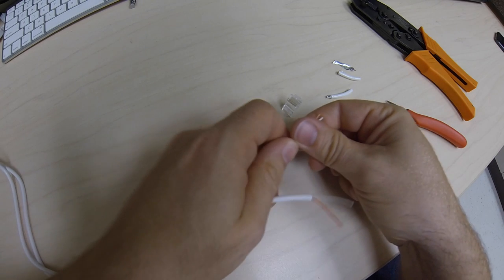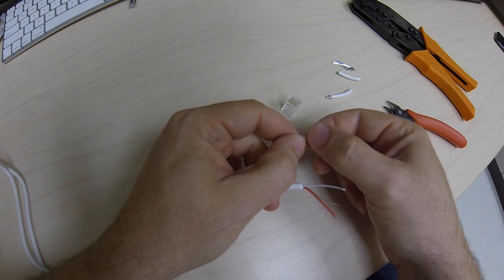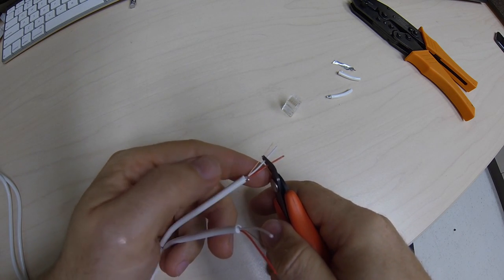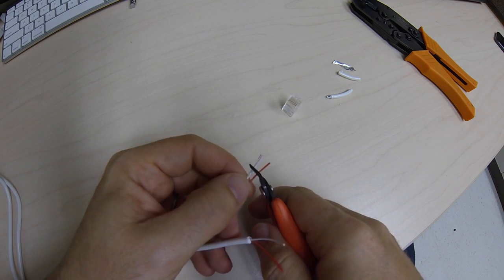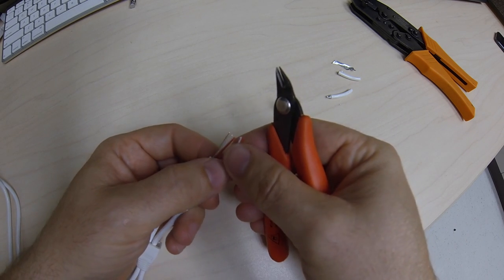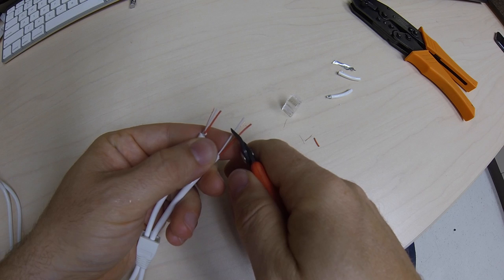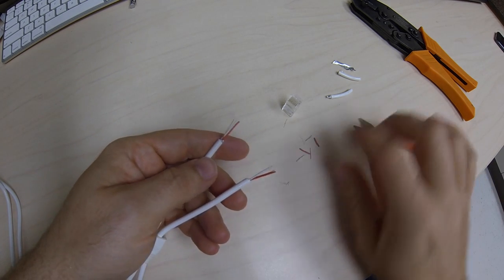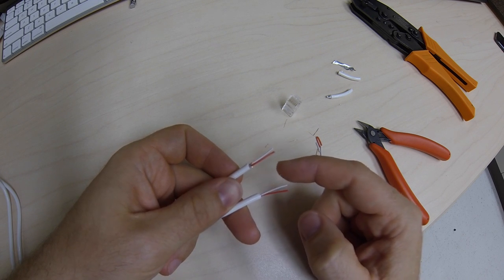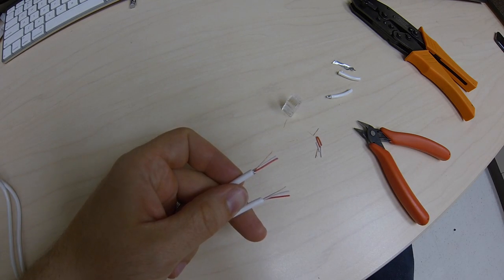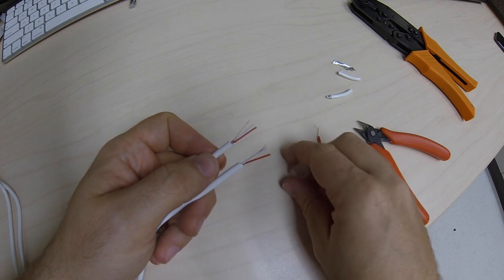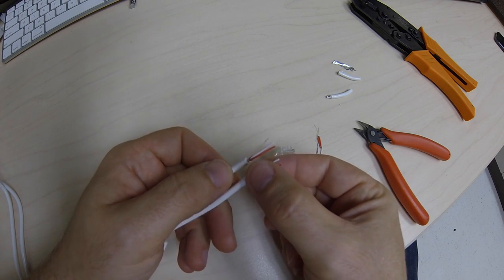These are way too long. I'm going to trim these back to be a little closer to the right length, probably about that long. I want these to be a little bit on the long side, but not too bad. Also, these are a lot thinner than the other ones were, so it may not grab onto those very well. I may have to strip this back and double those up. We'll see - I have another connector in case I fail.